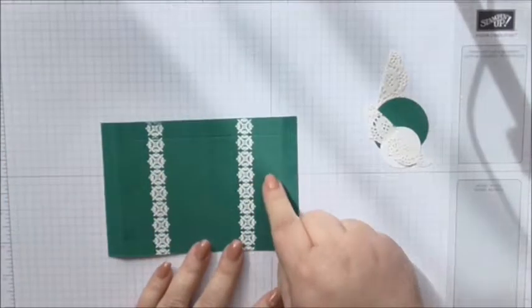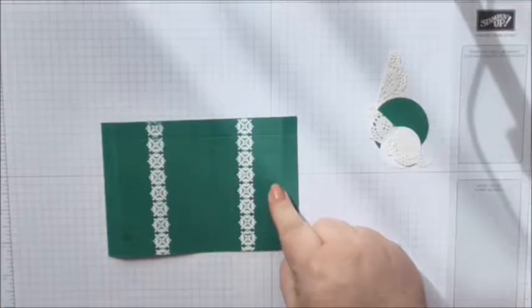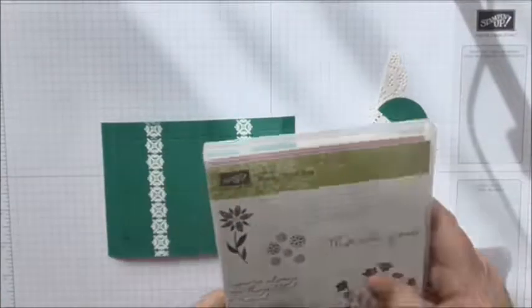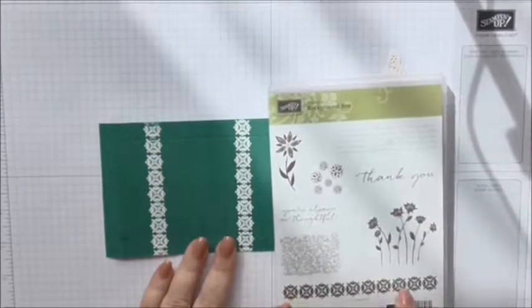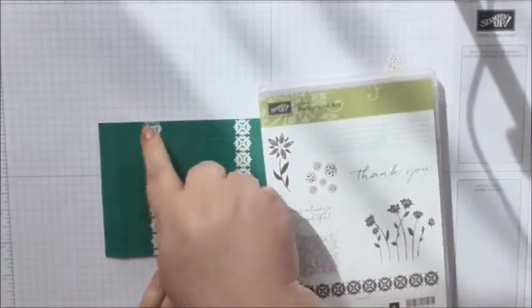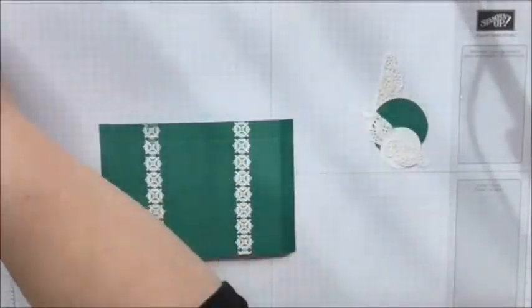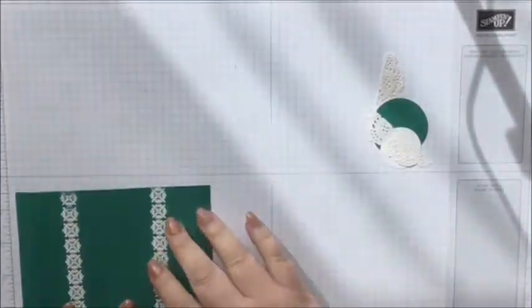So what I've done is I've used the Background Bits stamp set again. I used this yesterday as well but I've used that and I used this one, and what I've done is I've used white embossing powder and I've heat embossed just down the middle of these two pieces.